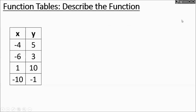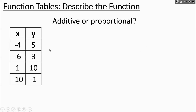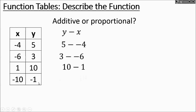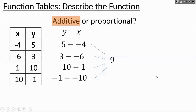Next table: is it additive or proportional? 5 divided by negative 4 is not the same as 3 divided by negative 6, so it's not proportional. Let's check if it's additive using y minus x: 5 minus negative 4, 3 minus negative 6, 10 minus 1, and negative 1 minus negative 10. That gives us 5 plus 4, and 3 plus 6. They all work out to 9. So it's an additive relationship — we're adding 9 to every x. The rule is y equals x plus 9.